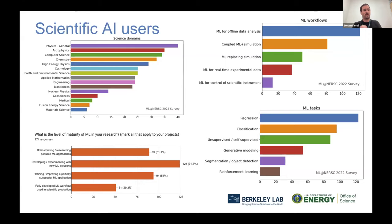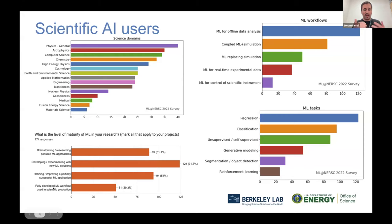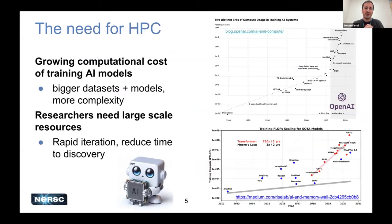From our 2022 survey, our scientific AI users are coming from all kinds of science domains. There's also a wide range in expertise and in the maturity of workflows being developed — from people at a brainstorming phase all the way to fully developed AI workflows in scientific production. People are doing things like offline data analysis, augmenting or replacing simulations, and regressions — predicting numerical quantities. There's also classification, generative modeling, and a growing need for high-performance computing resources due to the growing computational cost of training AI models, particularly as we tackle harder problems with bigger datasets and models.